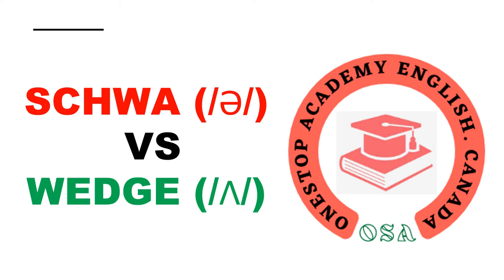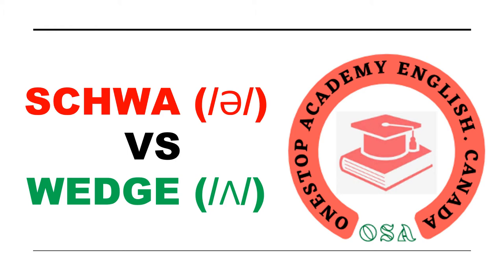Hello everyone. Welcome to One Stop Academy English. In this lesson you will learn the difference between schwa and wedge sound. It is mostly confusing for people to differentiate between these two sounds because both of the phonetic symbols sound as 'A'. So if the sound is the same, what is the difference? Let's find out.